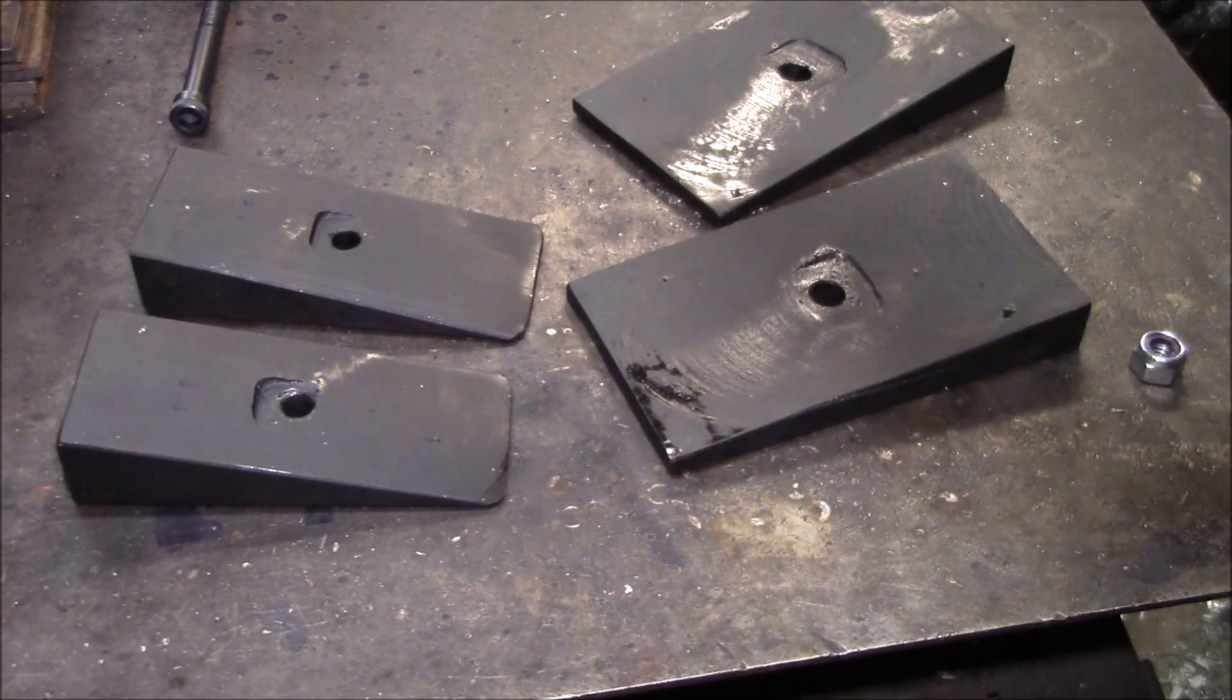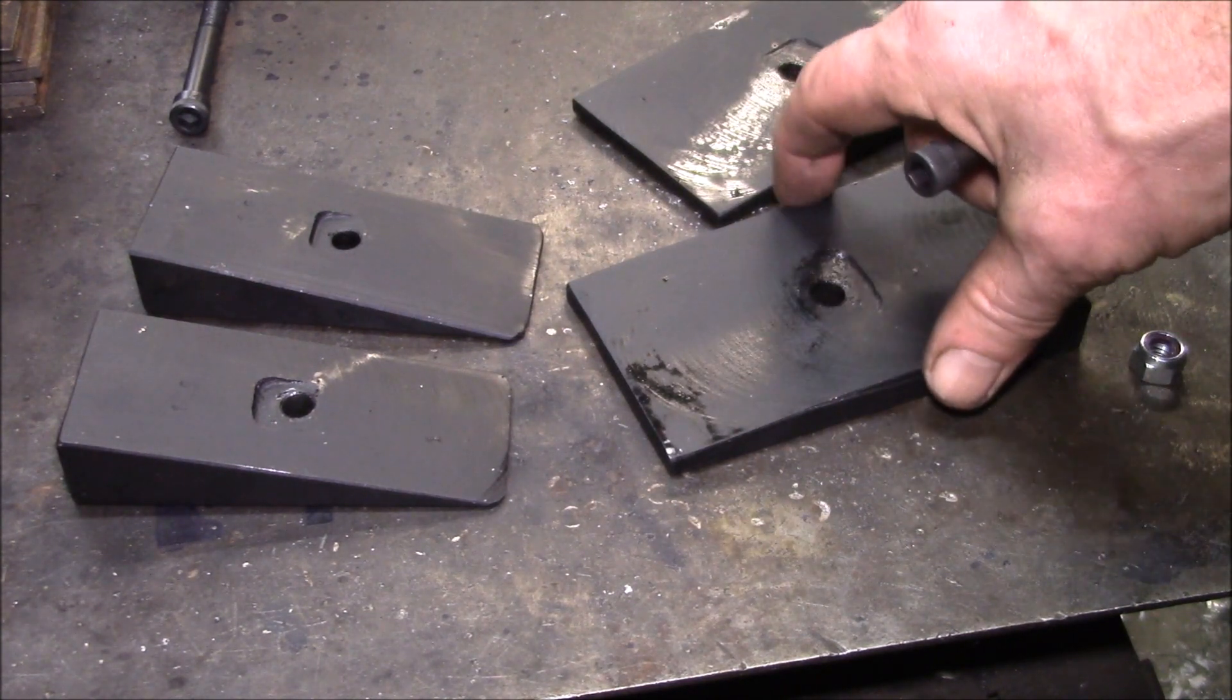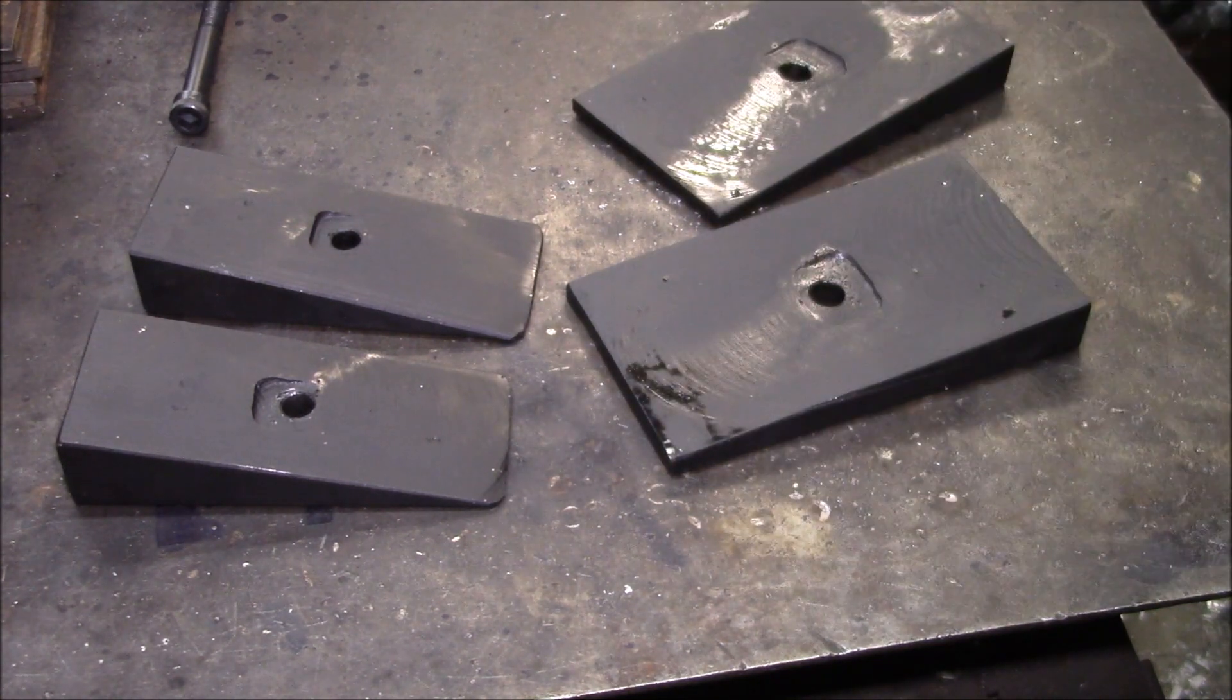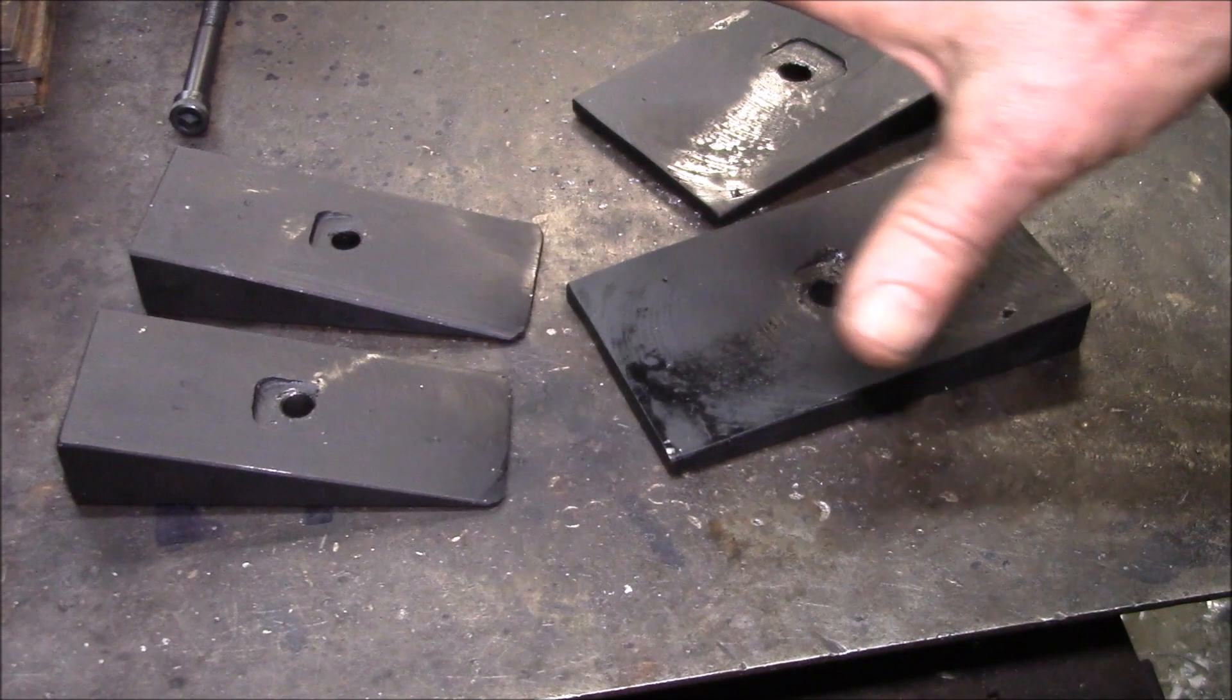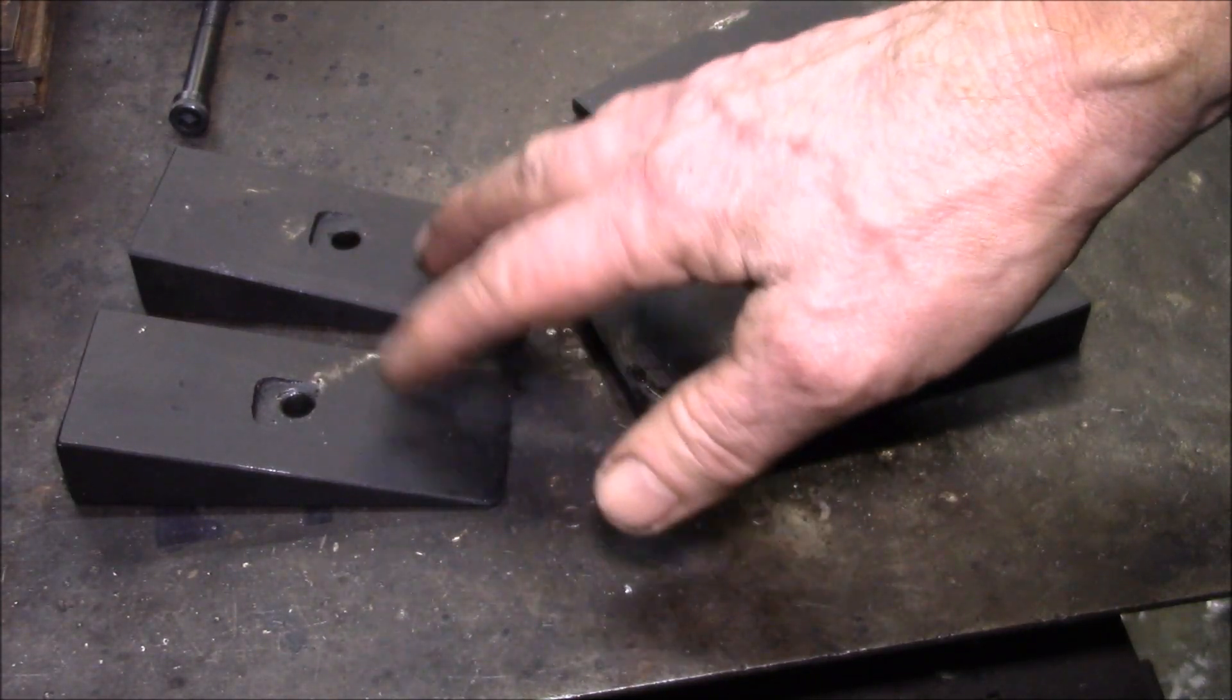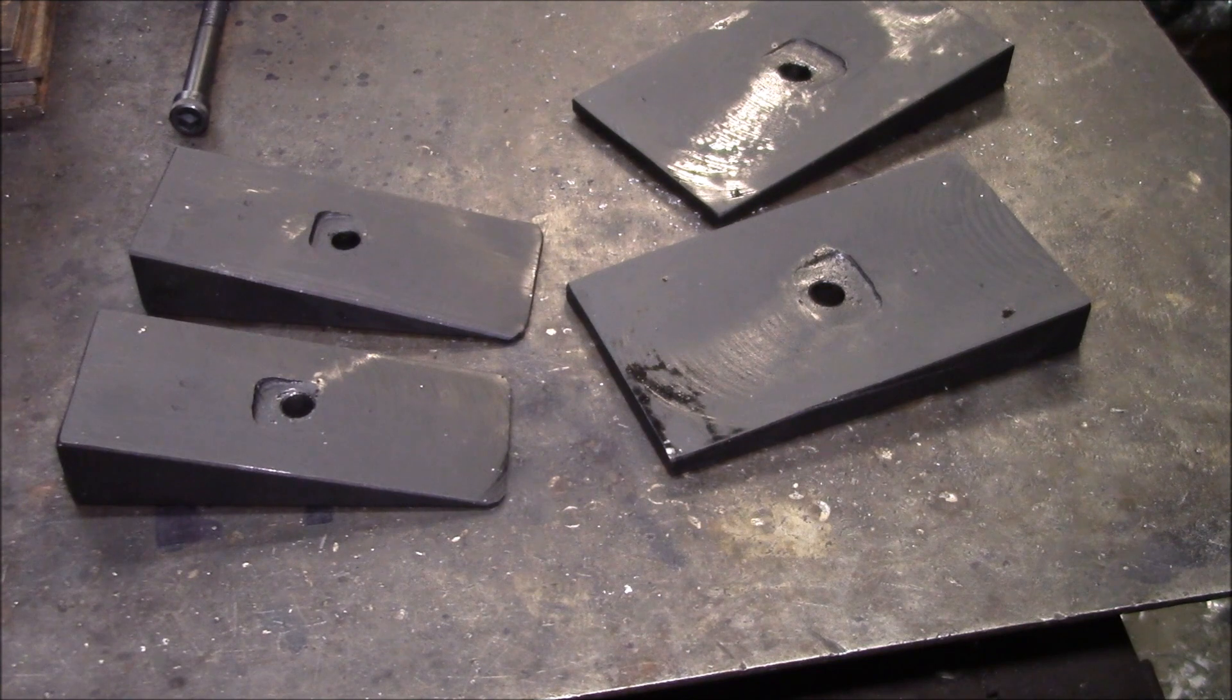So this shows kind of the range of sizes. This is among the smallest shims we make, inch and three-quarter for the early model Jeeps. This is probably for an FJ60 Toyota Land Cruiser, the two and three-quarter inch wide. We do three inch wide for some of the newer Ford models, two and three-eighths wide, two and a half for the Jeeps. Pretty much any width, any length, any angle within reason. I think we've done either 15. I think we did a 17-degree shim once. These are 12. These are five. Anything from one degree up about as high an angle as you can imagine.